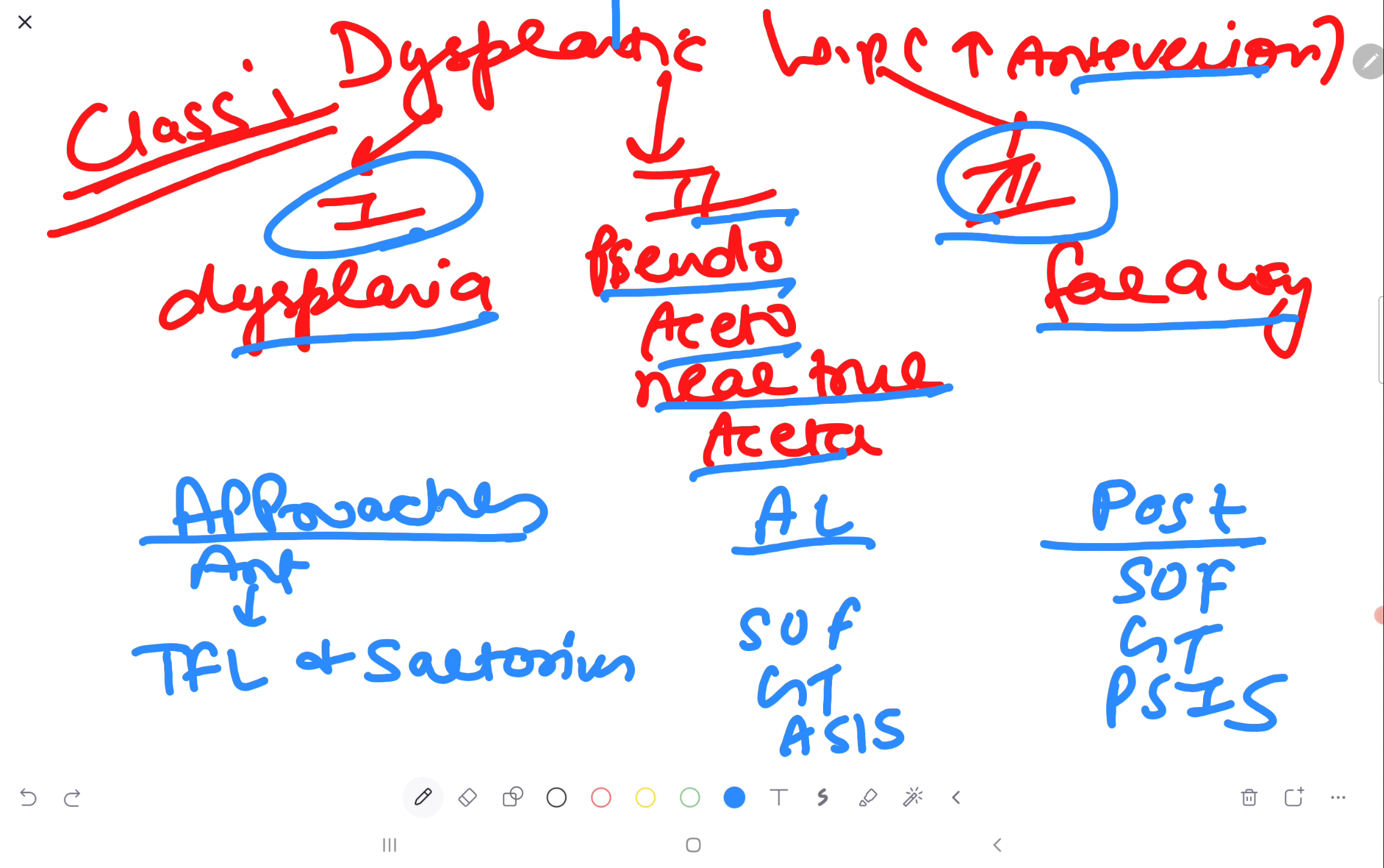Approaches for the hip arthroplasty: anterior, anterolateral and posterior. In the anterior, the incision intersection is done between the tensor fascia latae and sartorius. In the anterolateral, incision is in line with the shaft of femur to GT to ASIS. In the posterior approach, shaft of femur to GT to PSIS.